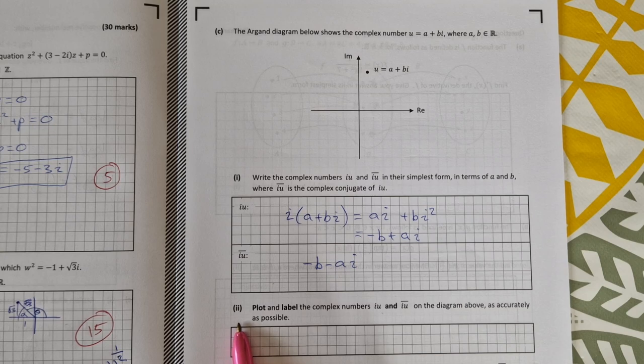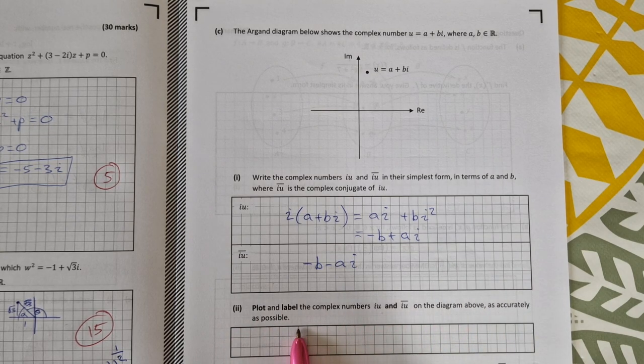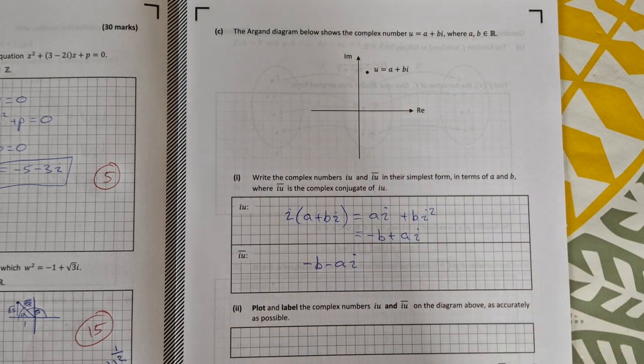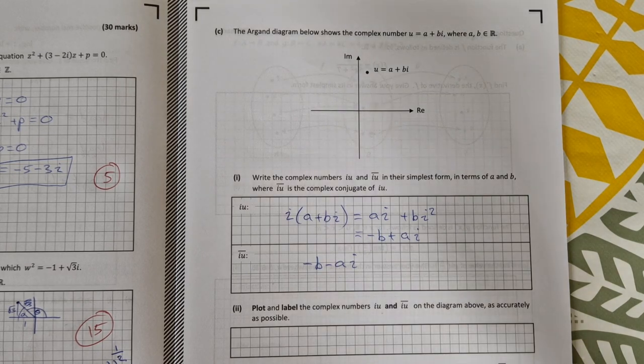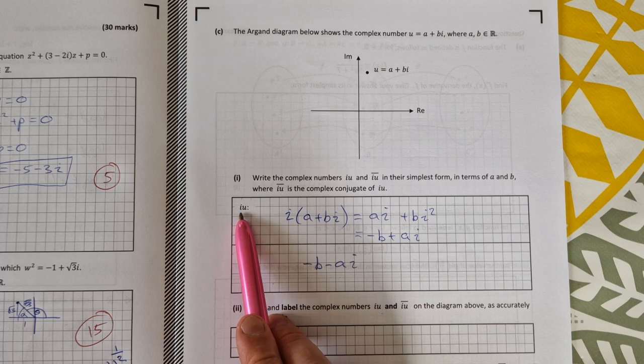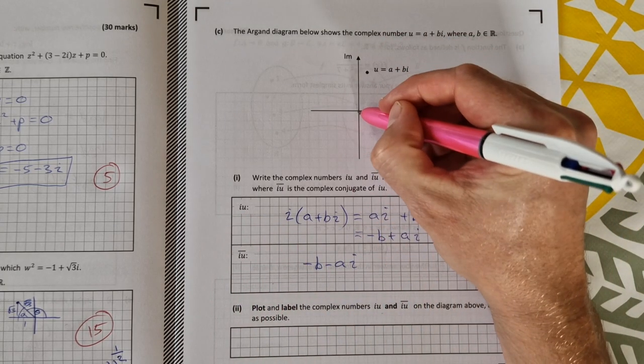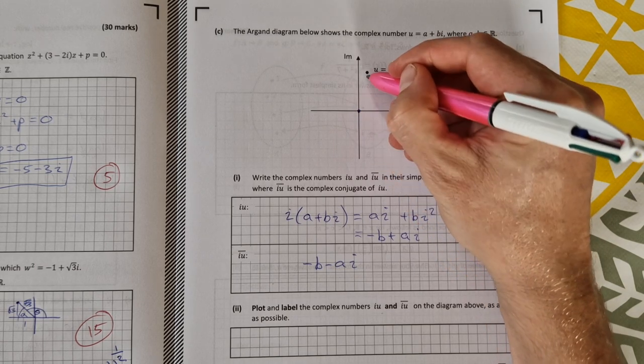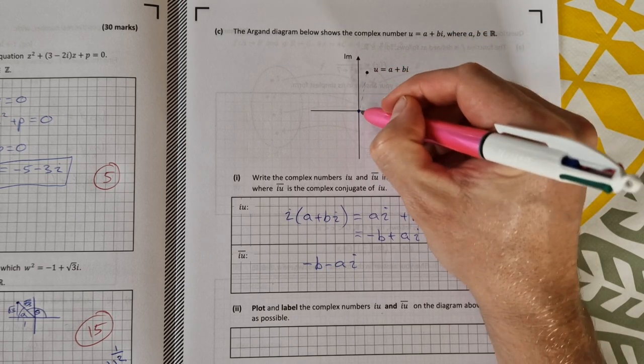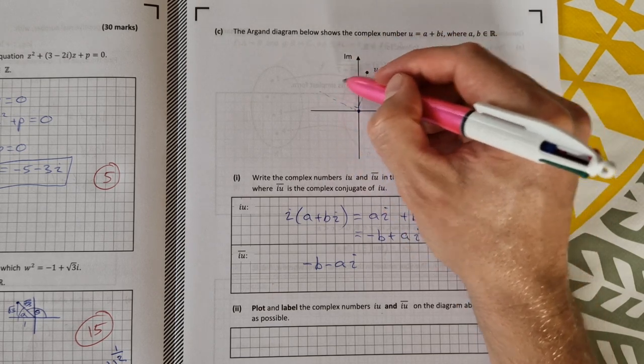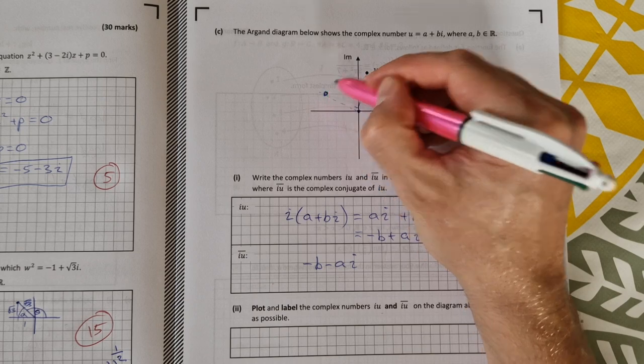Part two, you're asked to plot and label the complex numbers on the diagram above as accurately as possible. They don't have any grid, so it's just a fairly loose sketch of it, but just be as accurate as possible. So iu, if you multiply by i, that's a rotation anticlockwise with the origin as the center. So if I wanted to do that, I'd go out this way and that would be a 90 degree angle and out the same distance and I would get iu here.